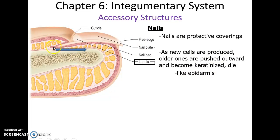Nails are another kind of protective accessory structure also produced by keratinized cells. Cells grow at the base or root of the nail and then push forward, and they die as they get pushed further out. The whitish color under the base of your nail is called the lunula.